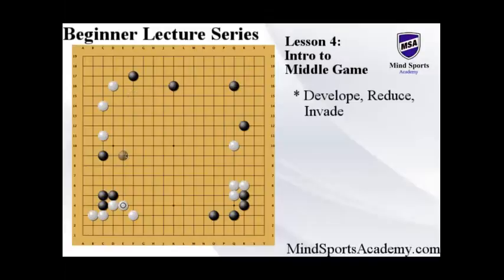In this case, though, Black defended his weakness first, and it's White's turn. So, since it's White's turn, we need to either reduce or invade this area.